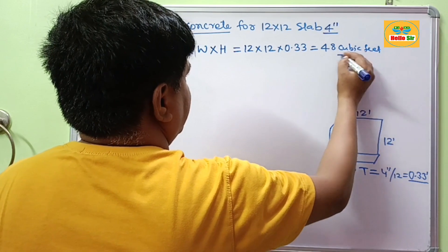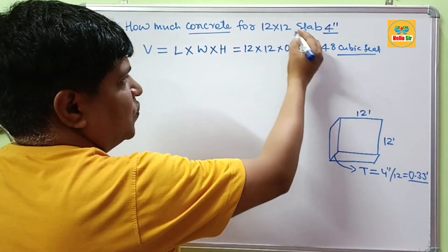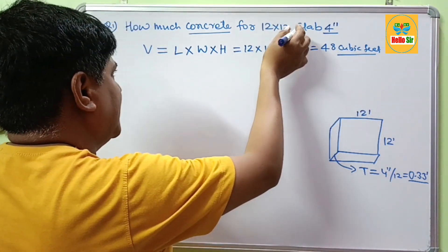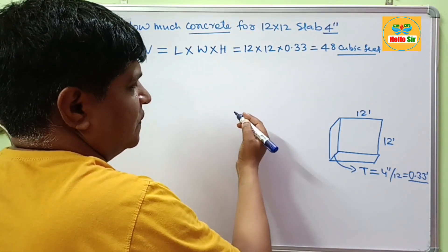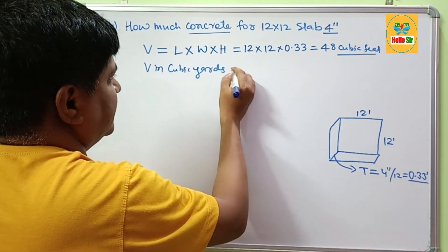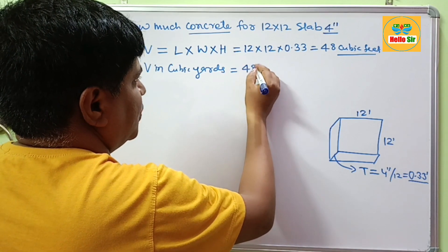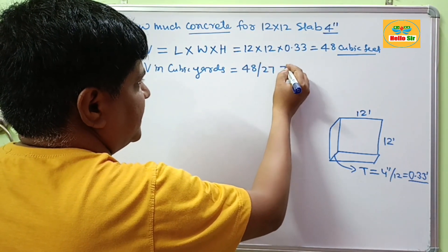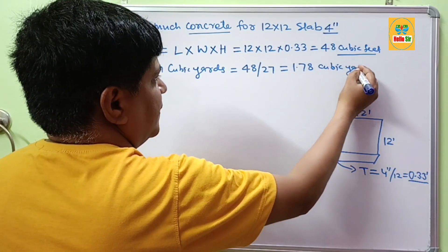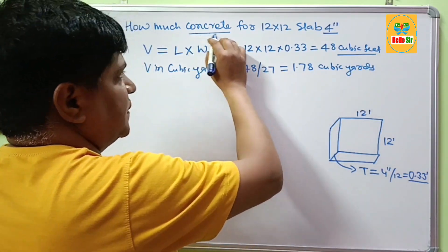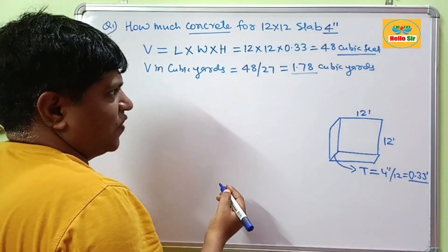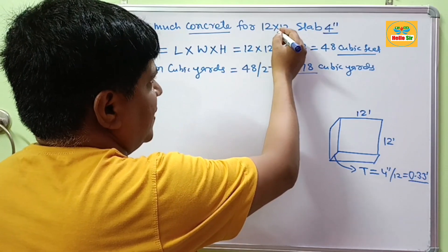So 48 cubic feet of concrete is required for a 12x12 slab at 4 inch thickness. If you want to measure the concrete quantity in cubic yards, take the volume in cubic feet — 48 cubic feet — and divide by 27. This comes out to about 1.78 cubic yards. So 1.78 cubic yards of concrete is required for this slab.